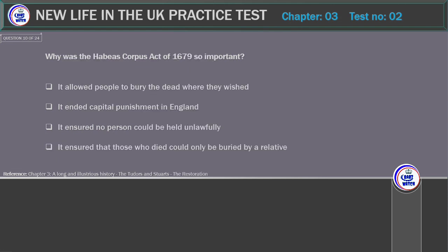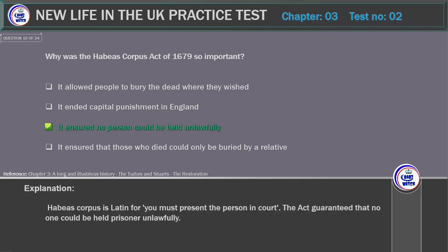Why was the Habeas Corpus Act of 1679 so important? Options: It allowed people to bury the dead where they wished; it ended capital punishment in England; it ensured no person could be held unlawfully; it ensured that those who died could only be buried by a relative. Correct answer: It ensured no person could be held unlawfully. Explanation: Habeas Corpus is Latin for 'you must present the person in court.' The Act guaranteed that no one could be held prisoner unlawfully.